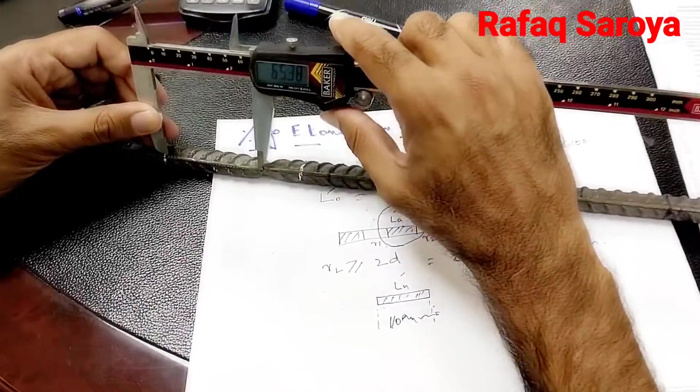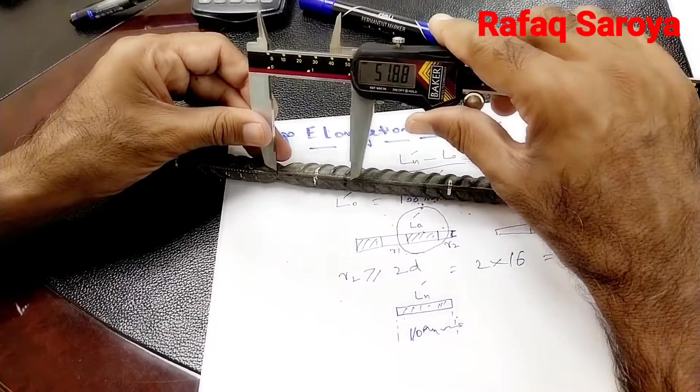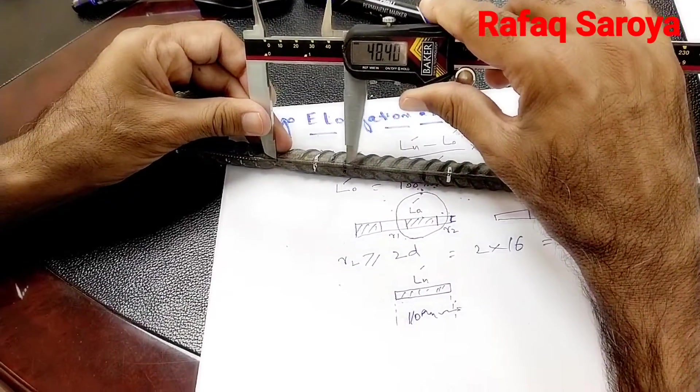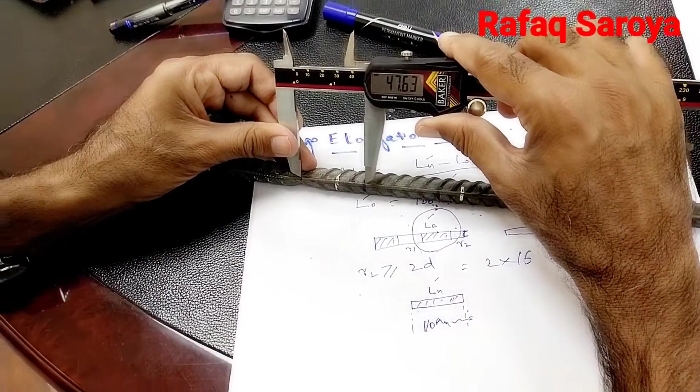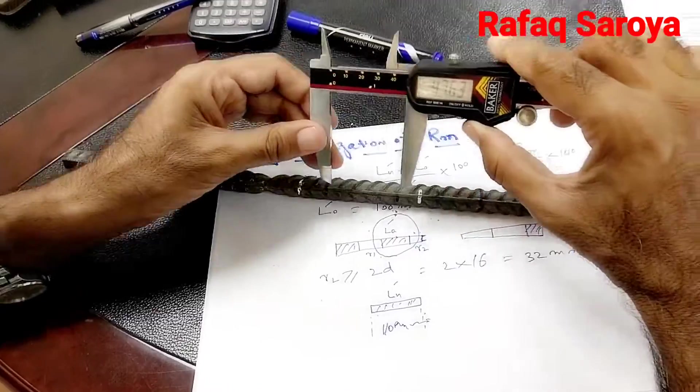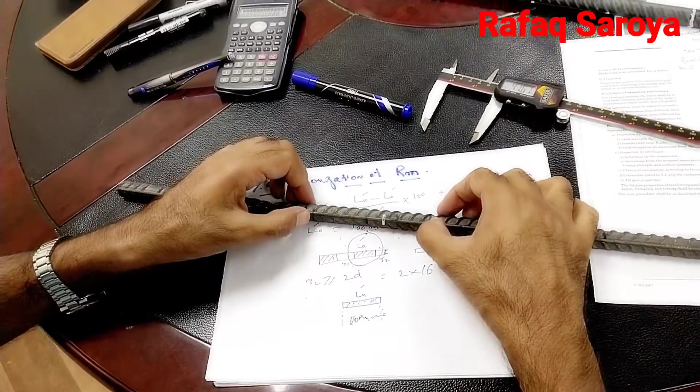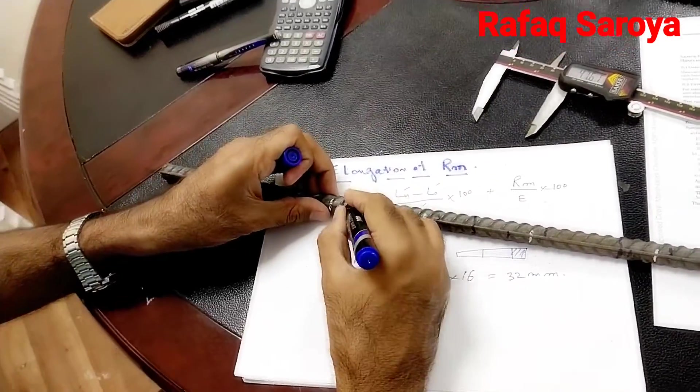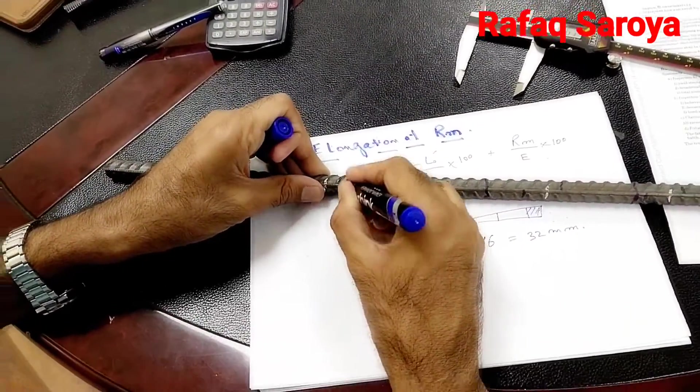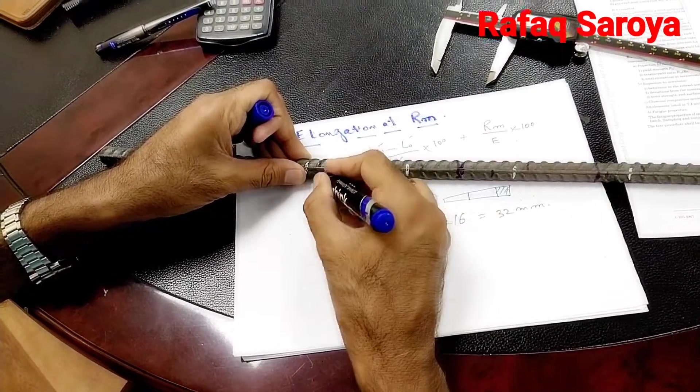At least the distance should be greater than 32 mm. So it is nearly 47 mm, which is greater than 32 mm, and we will take into consideration this fraction.